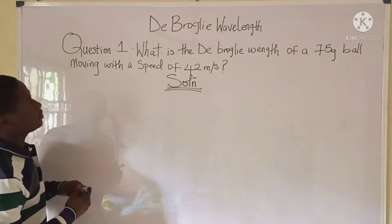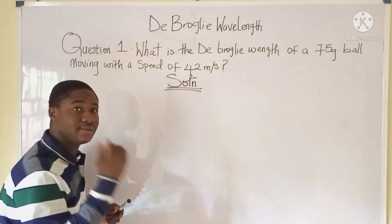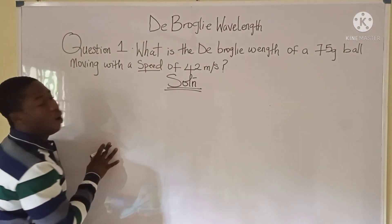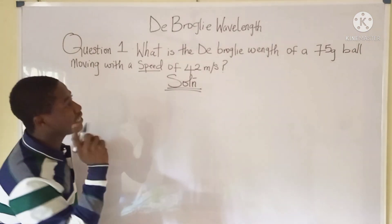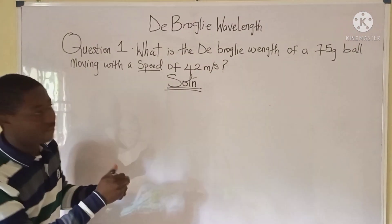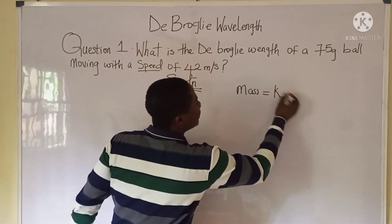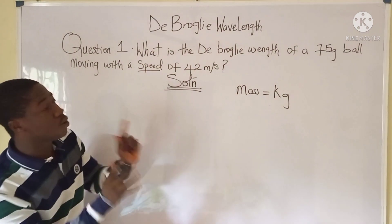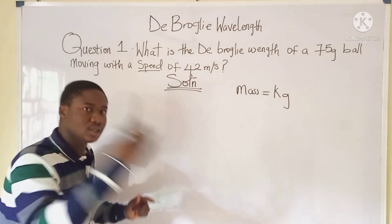The question says: what is the de Broglie's wavelength of a 75-gram bob moving with a speed of 42 meters per second? It should be noted that when solving problems on de Broglie's wavelength, the mass must be in kilograms, not grams.